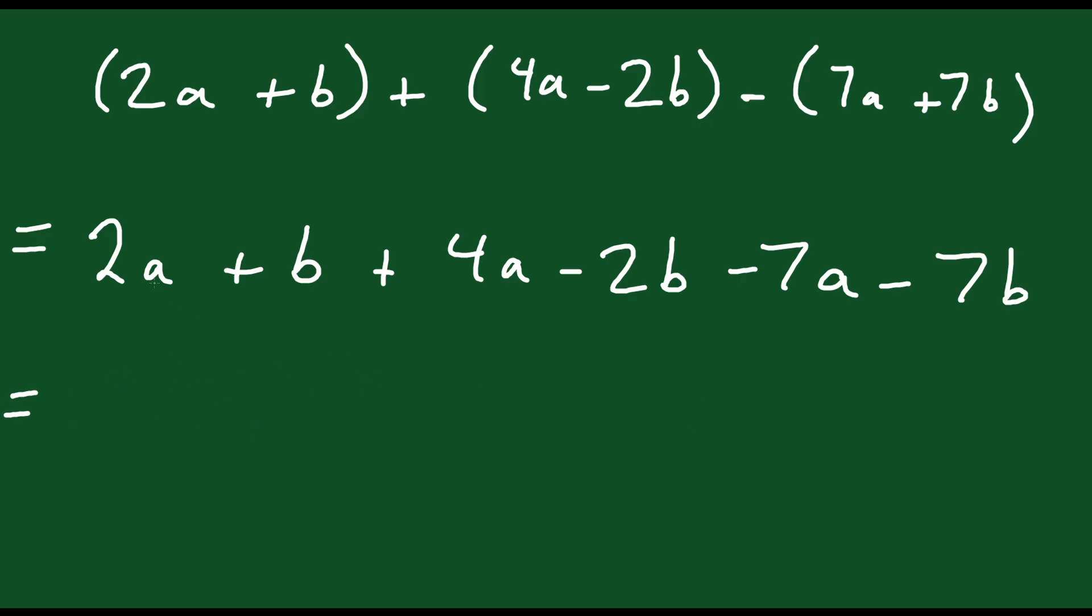So now we collect like terms. I have 2a plus 4a minus 7a. Well 2 plus 4 is 6 minus 7 is negative 1. So I'm going to have negative a. Just like that. Then you have b minus 2b minus 7b. Well b minus 2b is negative b. Negative b minus 7b is going to be minus 8b. 1 minus 2 minus 7. You have negative 8. And that's that.